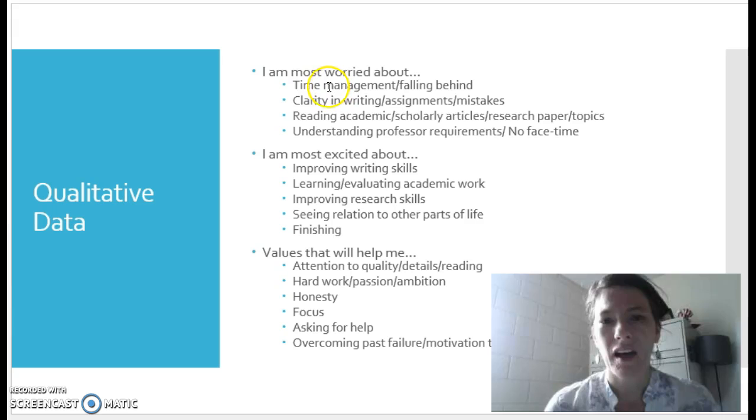So the open-ended questions, in order to make sense of them as a researcher, I need to maybe turn those into sets of categories. So as I was reading through these, I was able to identify four to five main categories of how people responded. So people are worried about time management and falling behind, about clearly understanding assignments or even being able to write clearly and express their ideas. Certainly the academic element of this and the research paper itself gives some people a little bit of worry. And then no face time, so the online aspects of course.